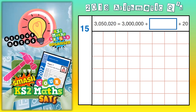Welcome all you Arithmetic Ninjas to question number 15. Now there's a couple of ways we can do this one. We've basically got a calculation on the right hand side of the equal sign, so this is almost like our question. And the answer on the left hand side of the equal sign is there. So the question is 3 million plus something — question mark — plus 20 is equal to 3 million, 50,000 and 20.